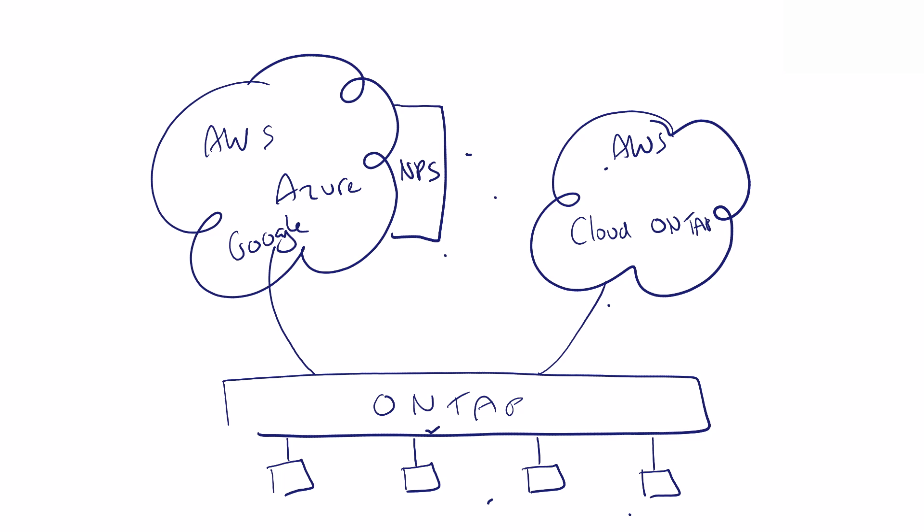The benefits here are that you can use the same feature-rich storage operating system to develop in the cloud environment and put that straight back into your production environment, knowing that the data methodologies and management are the same. So we have two broad solutions in market: NetApp Private Storage — a physical array right next to the cloud compute environments — and Cloud ONTAP, a true software-defined storage platform providing all the same benefits running inside an Amazon environment.